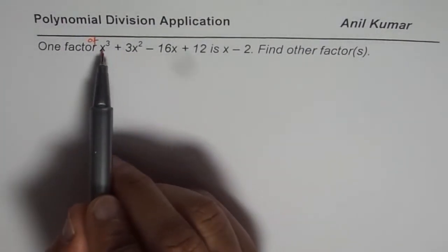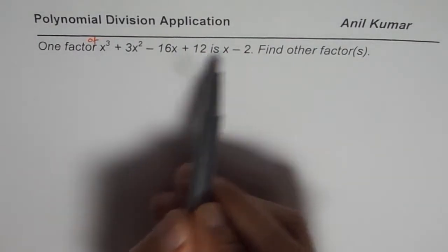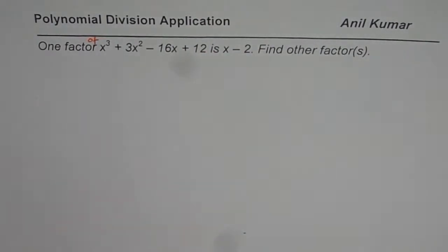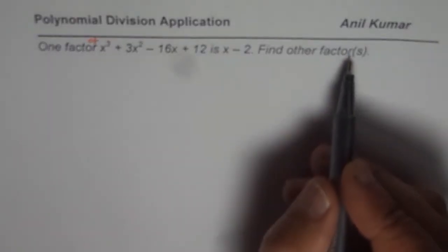So that is to say, when you divide this polynomial by x - 2, remainder will be 0. You will get some quotient and that quotient could be factored to get other factors.